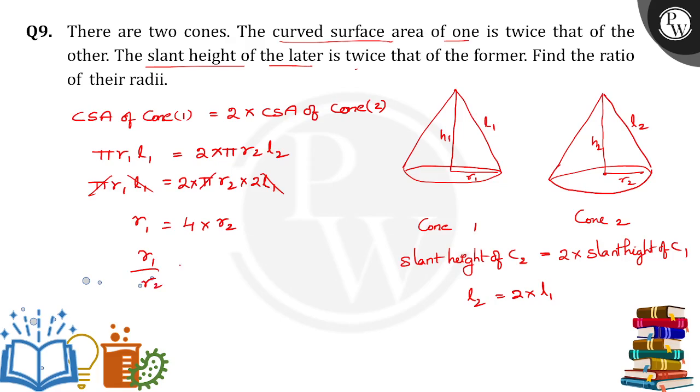R1 by R2 is equal to 4 by 1. Therefore, the ratio of their radii R1 to R2 is 4 to 1. Thank you.